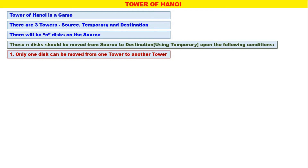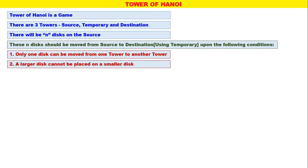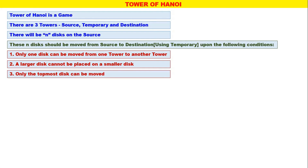First condition: only one disk can be moved from one tower to another tower at a time. Second condition: a larger disk cannot be placed on a smaller disk. A smaller disk can sit on a larger disk, but a larger disk cannot be placed on a smaller disk. Third condition: only the topmost disk can be moved.